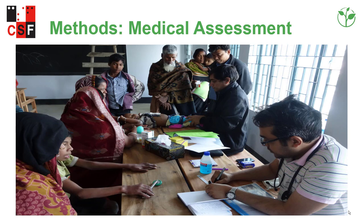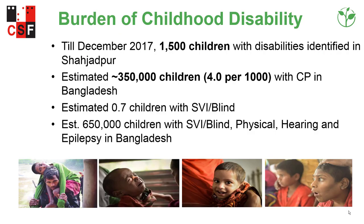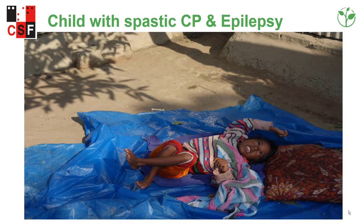A photograph showing doctors examining children for medical assessment. This slide shows the burden of childhood disability in Bangladesh. CSF identified 1,500 children with different types of disabilities. A CSF study found 4 per thousand with CP in Bangladesh, estimated at 350,000. Another study found 40,000 blind or severely visually impaired (SVI), and altogether 650,000 with SVI, blindness, physical, hearing, and epilepsy conditions in Bangladesh.